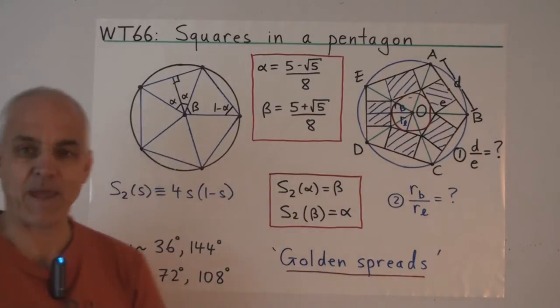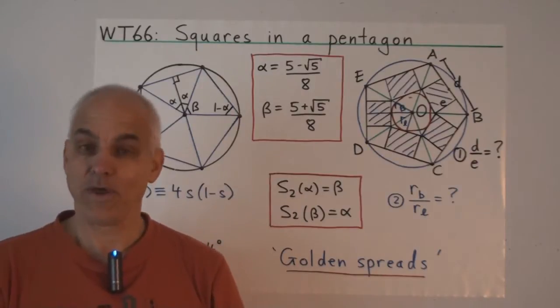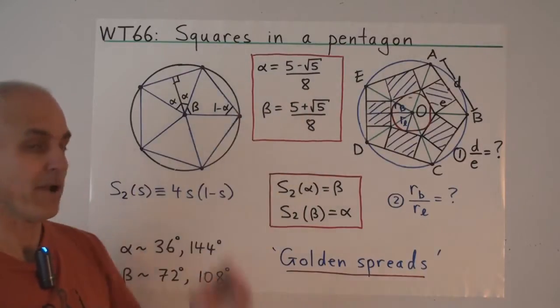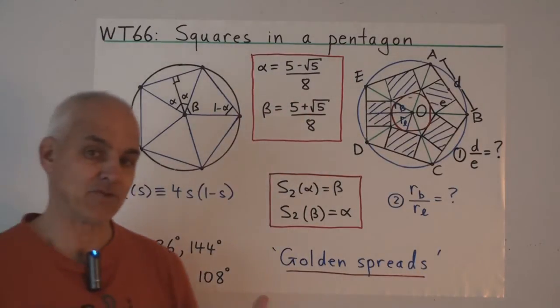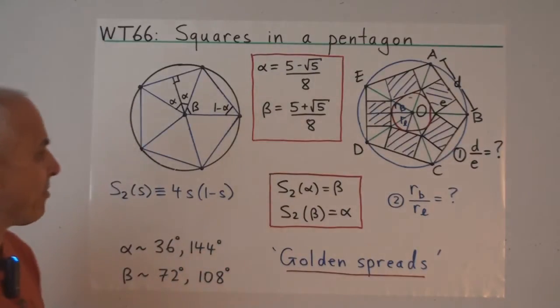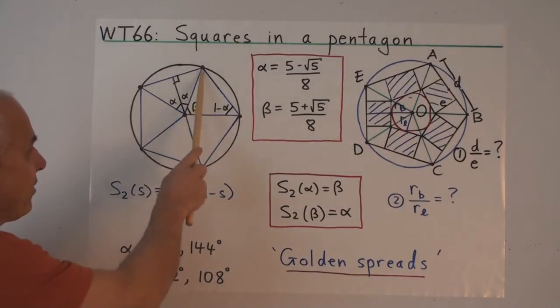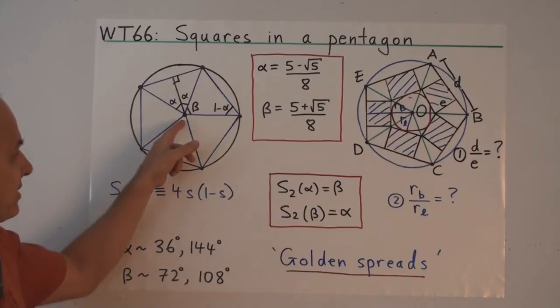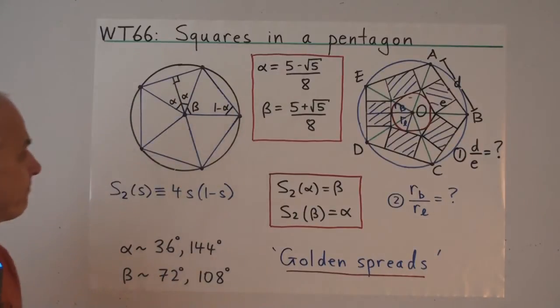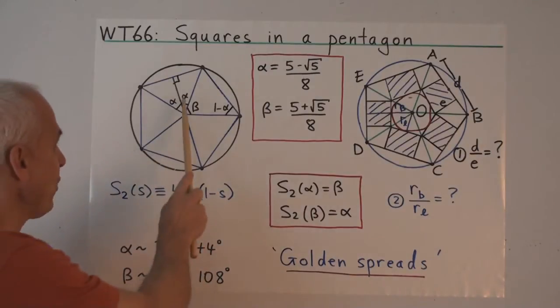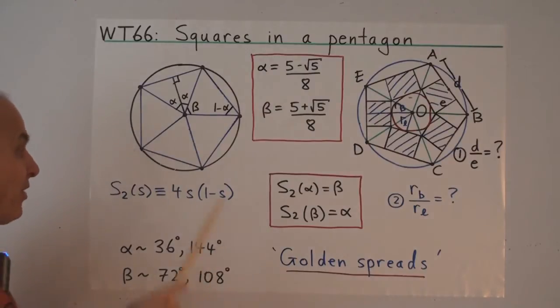So analysis of the pentagon rests crucially in rational trigonometry with two special spreads called the golden spreads. They're called alpha and beta, and here they are right here. This was discussed in Wild Trig 25. Beta is the spread subtended at the center by an edge of the pentagon. And if we split one of those into two by a bisector, then each of these spreads is alpha. So two alphas together make a beta, but also beta and beta together make an alpha.